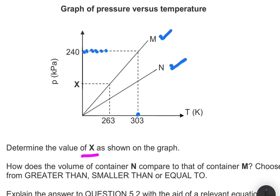The pressure of M is obviously 240 kilopascals, and then the pressure of N, although we don't know the exact value, we can see that it is less than 240 kilopascals. So for the same temperature, container M has a higher pressure, meaning that it has less volume.